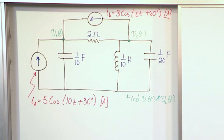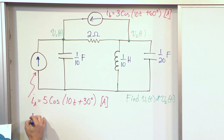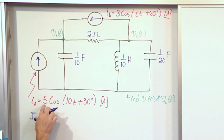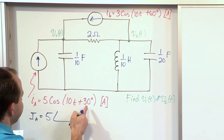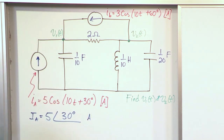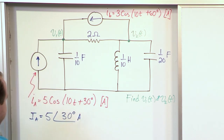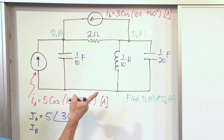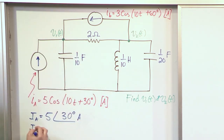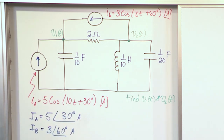The first thing we do is write our phasors. For Ia, the magnitude is 5 and it's a cosine, so we write the phase angle directly as 30 degrees. The frequency is 10 radians per second — we remember that for later. For Ib, the magnitude is 3 and it's also a cosine, so the phase angle is 60 degrees. So the phasors are: Ia = 5∠30° amps and Ib = 3∠60° amps.